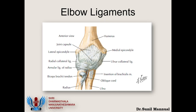The ulnar collateral ligament and the radial collateral ligament give stability to the elbow and prevent dislocation. The ulnar collateral ligament on the medial side prevents valgus stress — it prevents the joint opening up on the medial side. The radial collateral ligament on the lateral side prevents varus stress. The third structure to note carefully is the annular ligament of the radius.